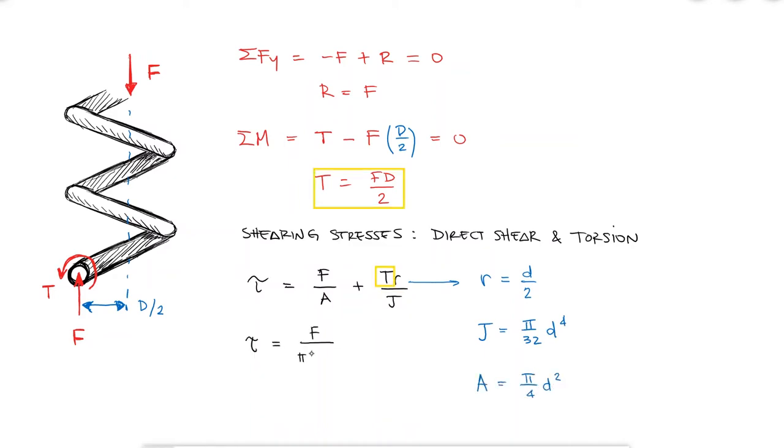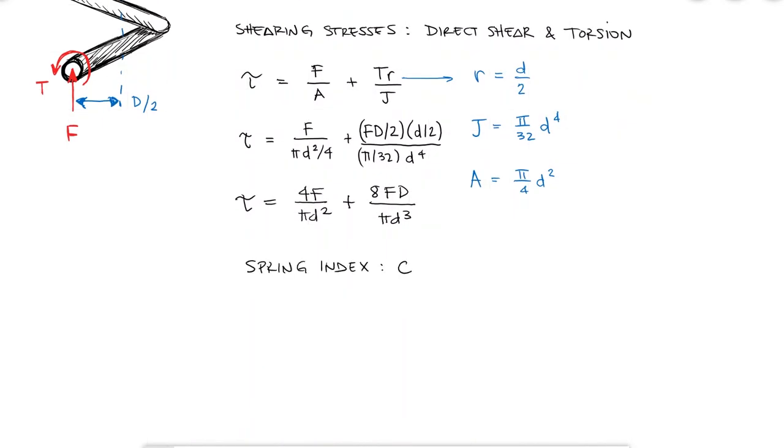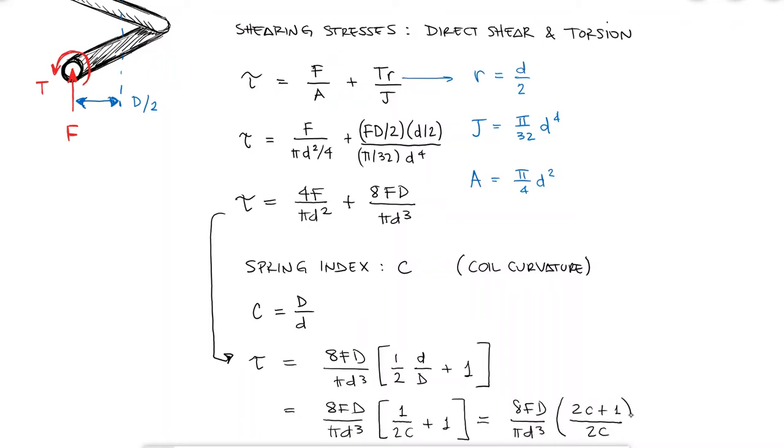Substituting the torque and the other variables, we find that the shearing stress is equal to 8Fd over pi d cubed plus 4F over pi d squared. If we define the spring index, which we will use extensively and is a measure of coil curvature, as capital D over lowercase d, we can simplify the shearing stress equation by factoring out a term that we'll call k sub s, the shear stress correction factor.